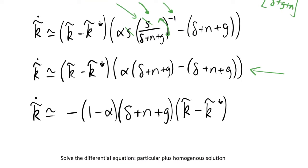We can take out a factor of minus one minus alpha, because these two terms in the brackets both have this factor of (1 − α) that we can factorize out. We get that our evolution of effective units of capital is equal to something quite a lot simpler than what we had before — we have just a simpler differential equation, and we can solve this.